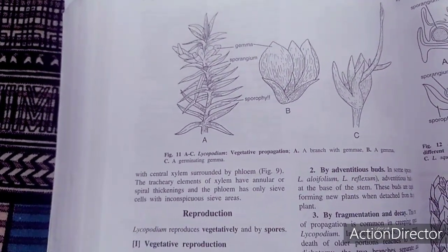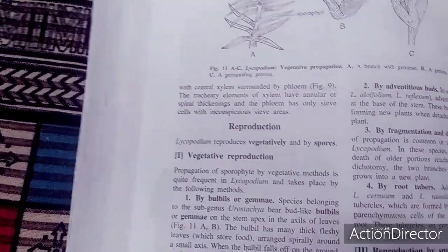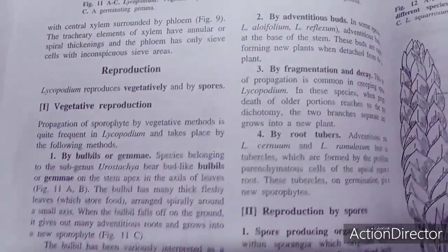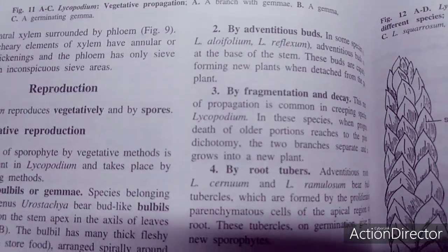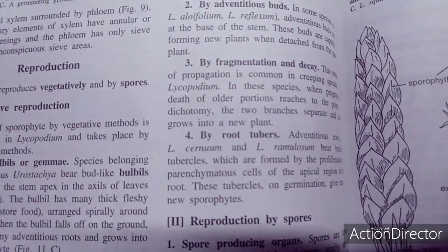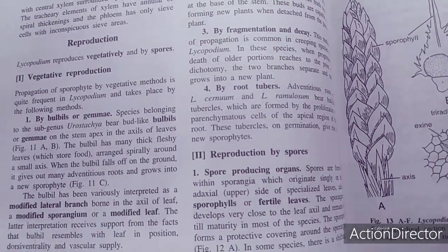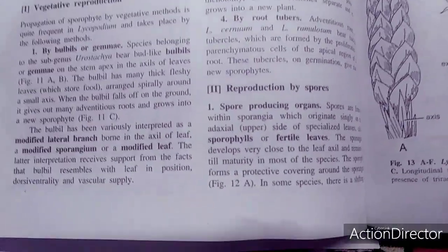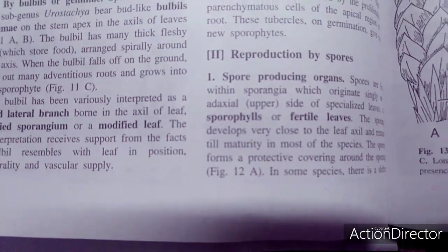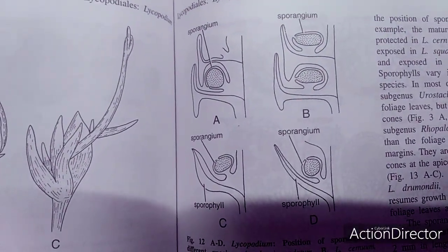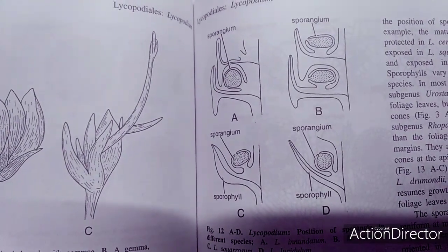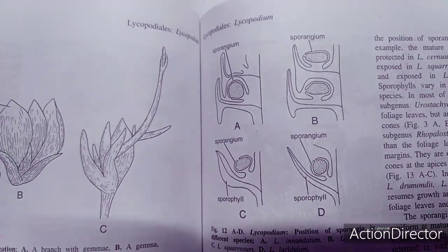Reproduction is by two methods: vegetative and sexual. Vegetative reproduction occurs by formation of bulbils or gemmae, adventitious branches, fragmentation and decay, and root tubers. Sexual reproduction is by spores — spore-producing organs are sporangia, borne on sporophylls. The sporophyll is a fertile leaf bearing sporangia. Since Lycopodium is homosporous, it produces only one type of spore.